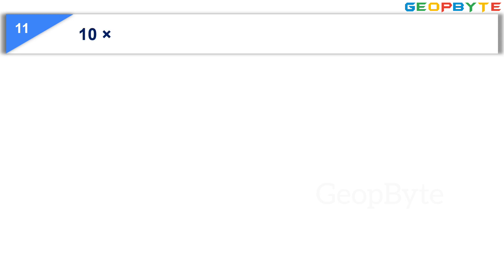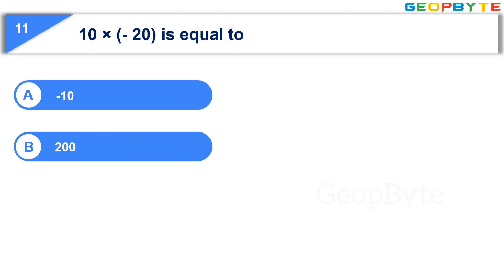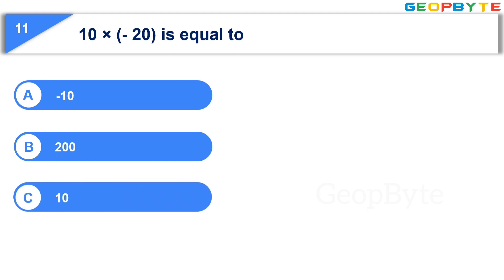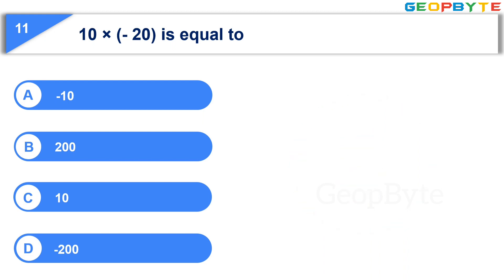Now let us see the eleventh question: 10 into minus 20 is equal to — Option A: minus 10, Option B: 200, Option C: 10, Option D: minus 200. Your time starts now. Your time is up and the correct answer is Option D: minus 200.